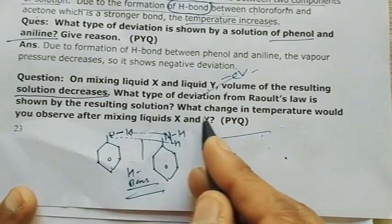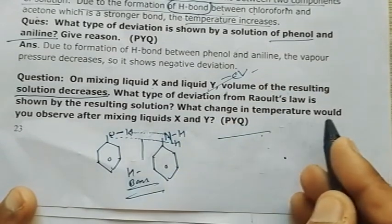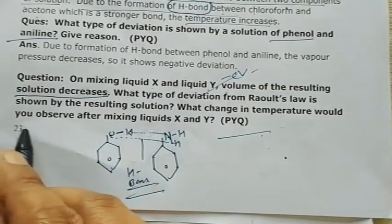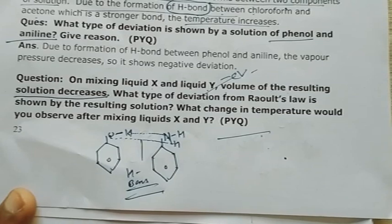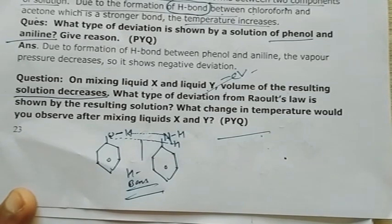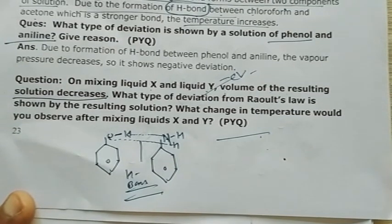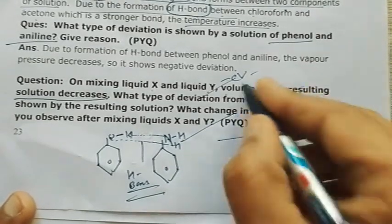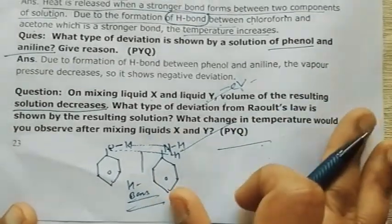What change in temperature would you observe? Since bond is forming strong, the solution will release heat — temperature will increase. So the solution shows negative deviation, and temperature increases because it is an exothermic process.